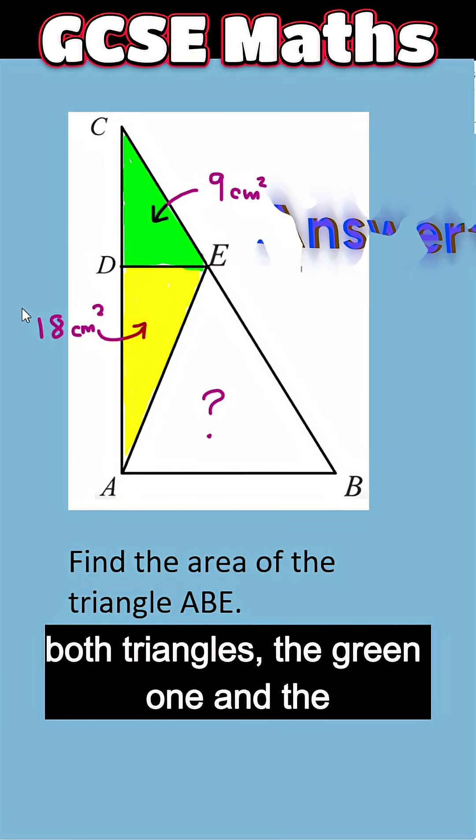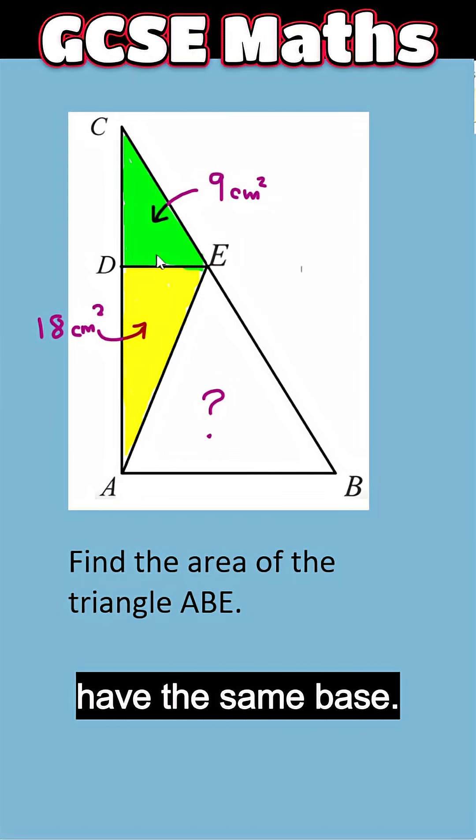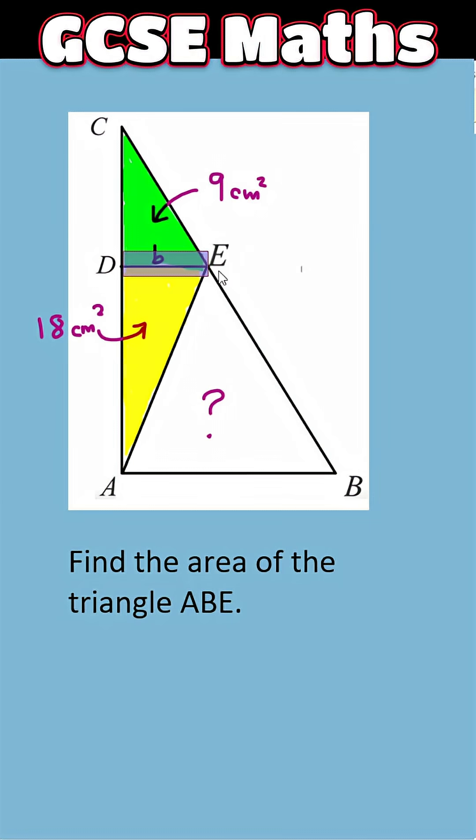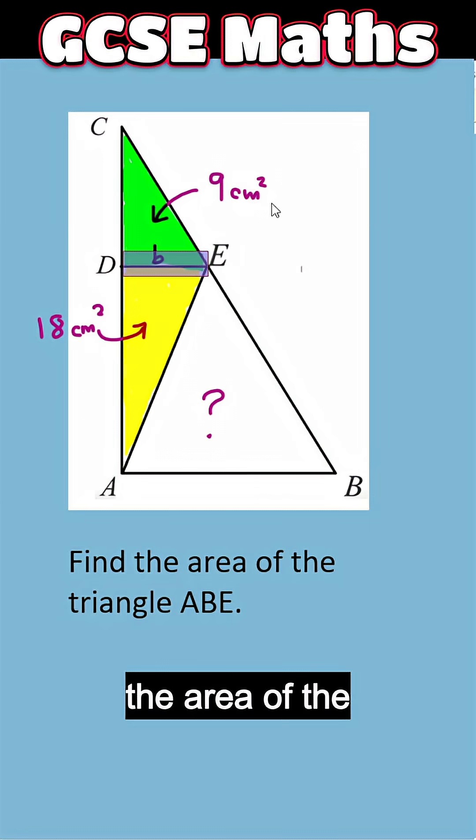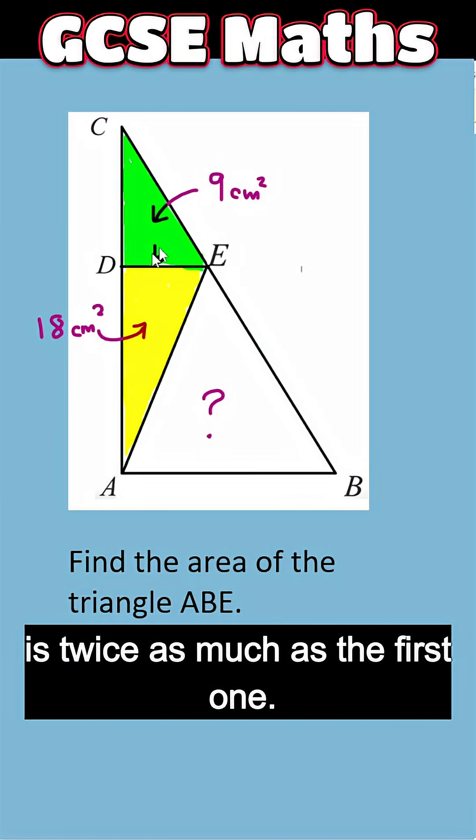Now we know both triangles, the green one and the yellow one, have the same base. The base is DE. However, the area of the yellow triangle is twice as much as the first one.